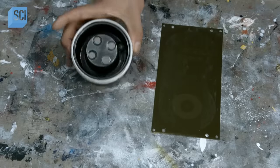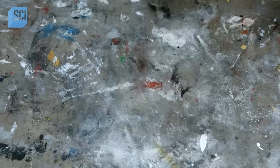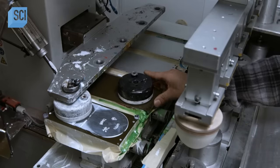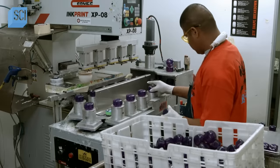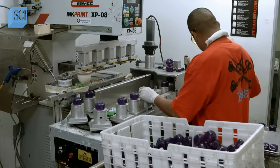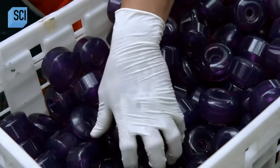A worker positions a magnetized ink cup over the image and installs them in a pad printing machine. The operator loads skateboard wheels onto posts that index them forward for printing.